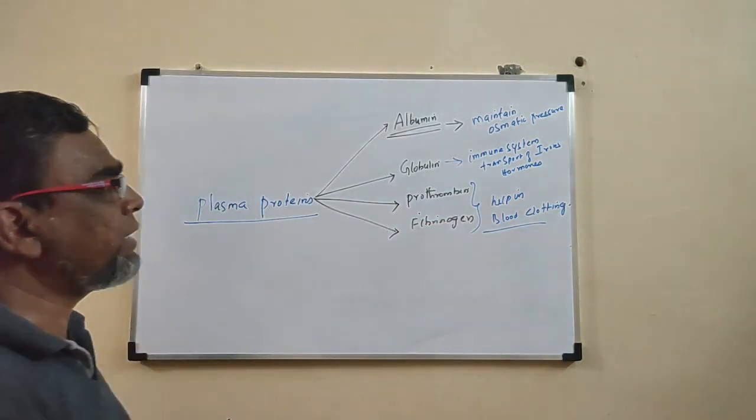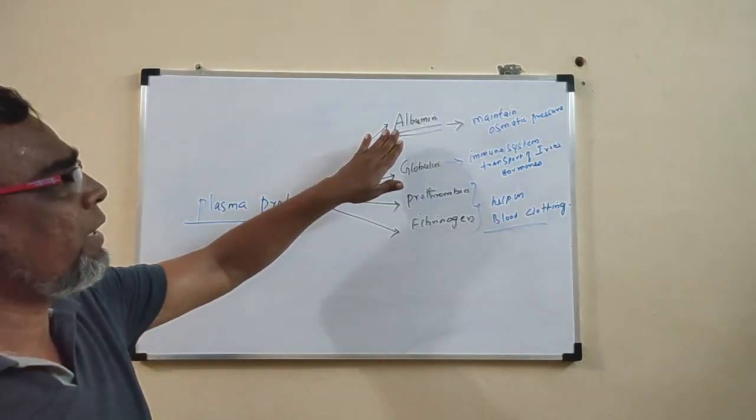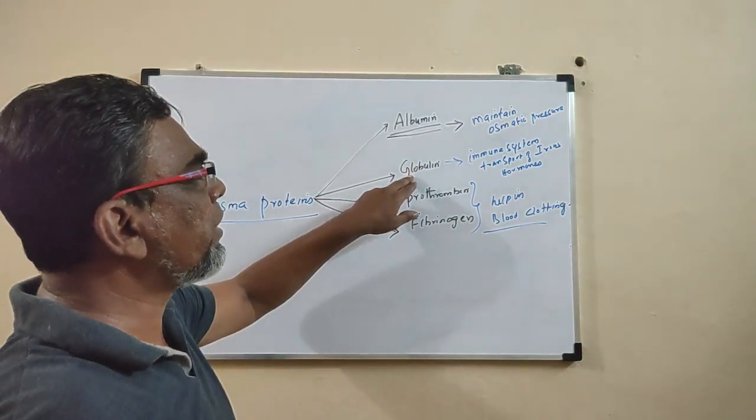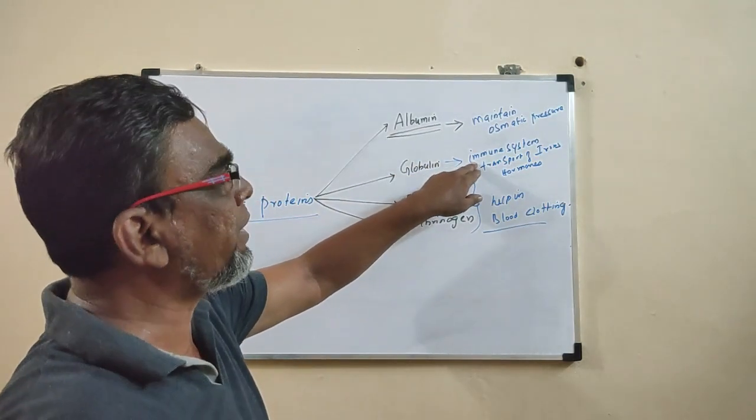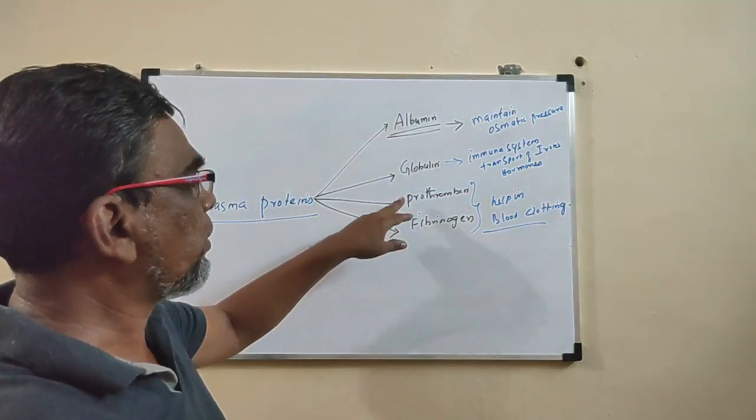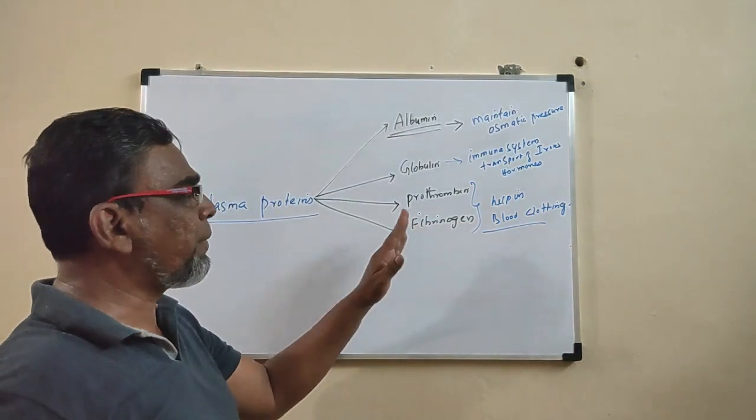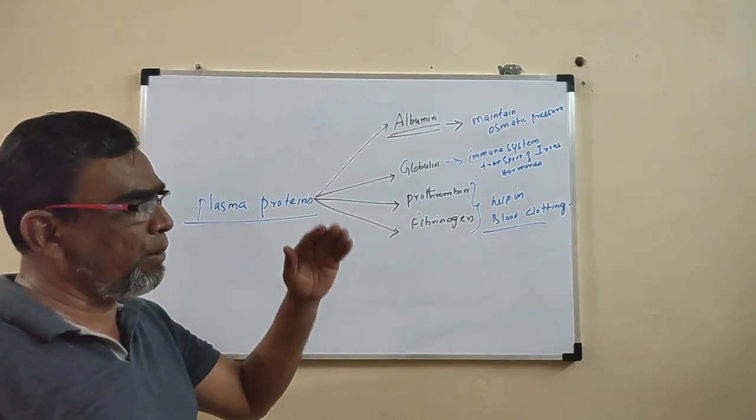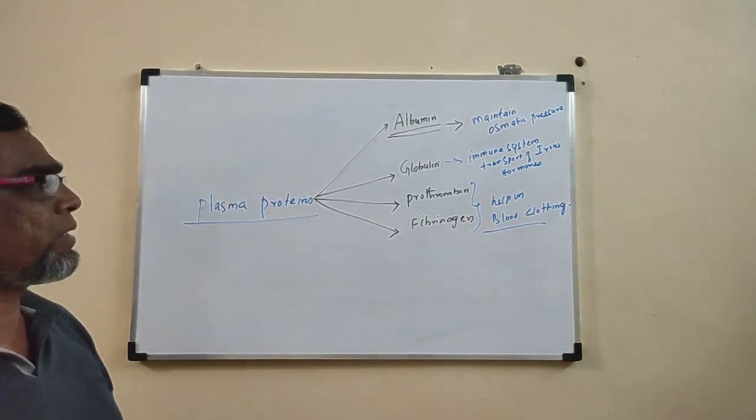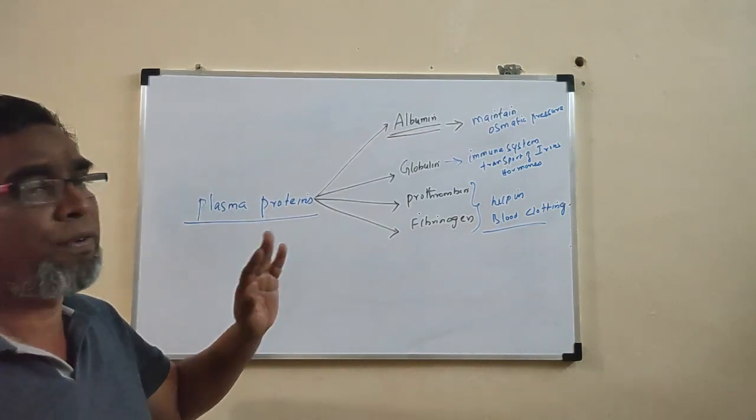So these are the four important proteins which has various functions. Once again, the albumin is a protein which helps to maintain the osmotic pressure. Globulin is a protein, it helps in immune system, in the formation of antibodies, and also transfer of ions and hormones. Whereas, prothrombin and fibrinogen helps in blood clotting. If the prothrombin and fibrinogen is absent or reduced, then what happens, blood clotting process will not occur. In other words, it leads to a disease, this is called hemophilia.